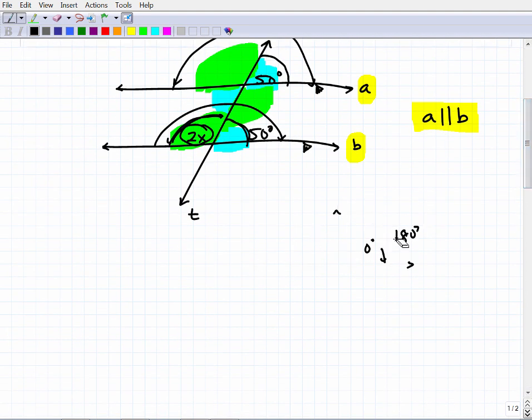So we can write ourselves a nice little equation here. We can say, OK, 2x plus 50 is equal to 180 degrees. So at this point, if you're still watching a video and you're like, OK, I understand that, go ahead and solve for x. So hopefully you can solve this basic equation. All right. I'll give you a moment to kind of give it a whirl. This is really basic algebra here.